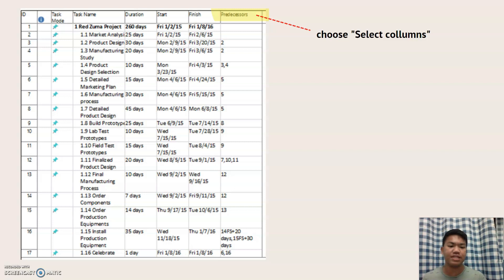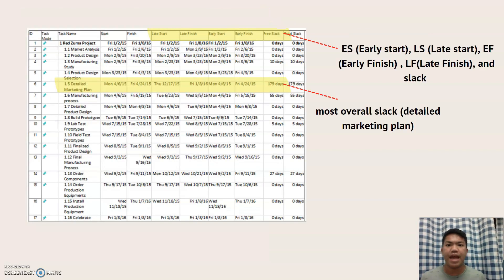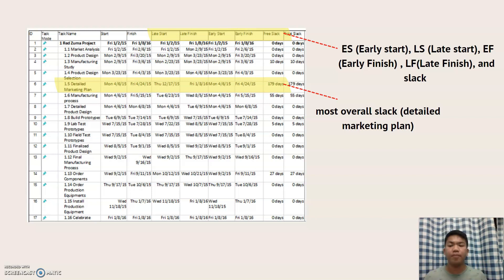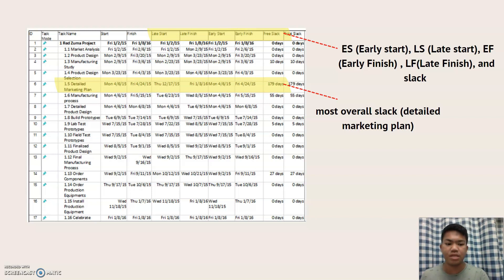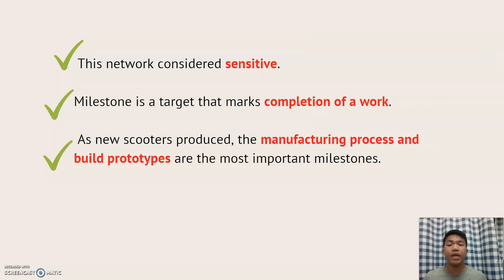By double-clicking the predecessors and choosing Select Columns, we can create our own columns for ES, LS, EF, and LF. From this figure we can see that the most overall slack belongs to the detailed marketing plan, which has 179 days of slack.